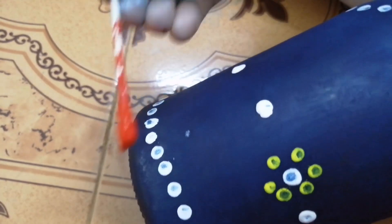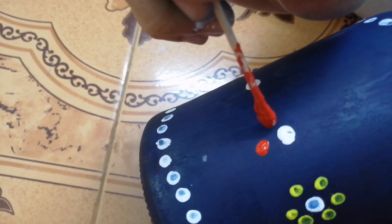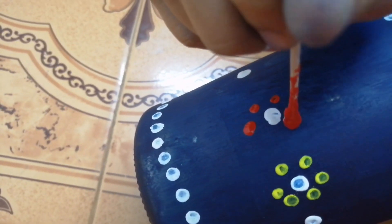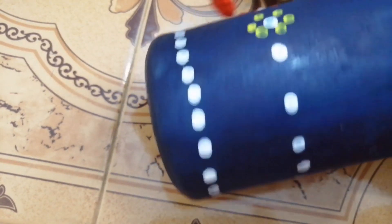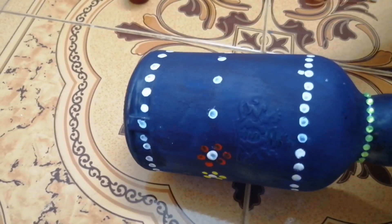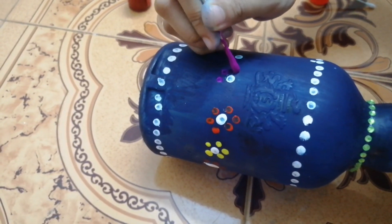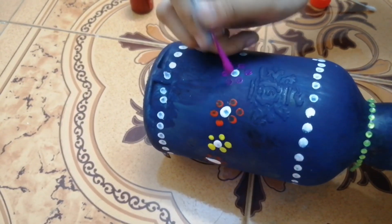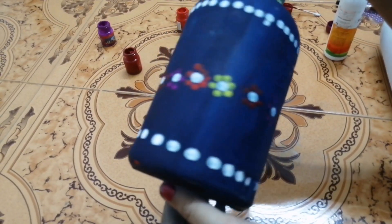Now I dip in the orange color. We have to do this for every flower. Do the same procedure for all the dots. Now I did flowers like this using these colors.